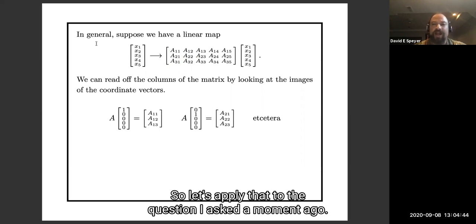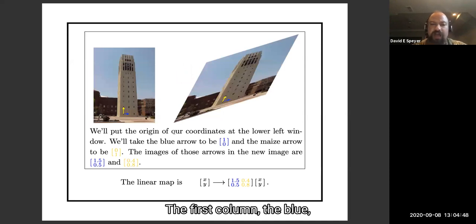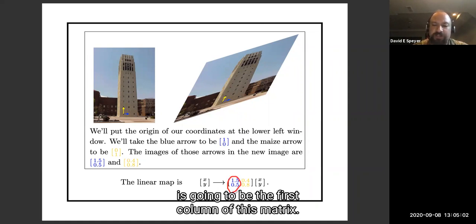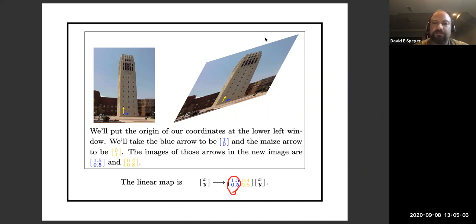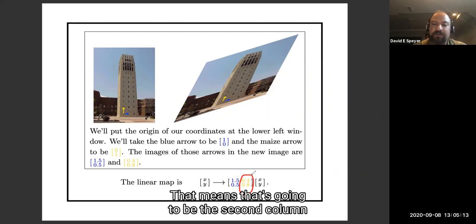Let's apply that to the question I asked a moment ago. The first column, the blue, the first coordinate vector, the blue arrow 1, 0, got mapped to 1.5, 0.5, which means that 1.5, 0.5 is going to be the first column of this matrix. The second coordinate vector, 0, 1, got mapped to 0.4, 0.8, that means that's going to be the second column of this matrix.